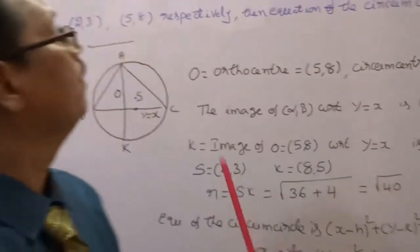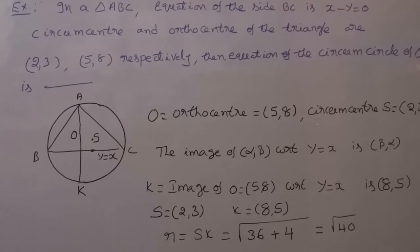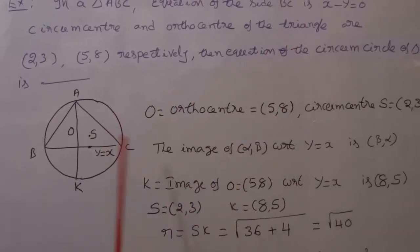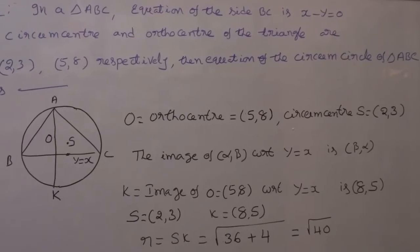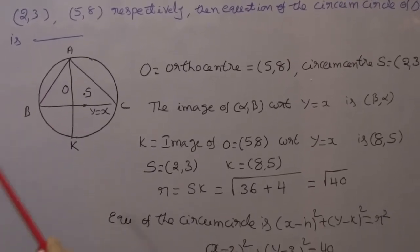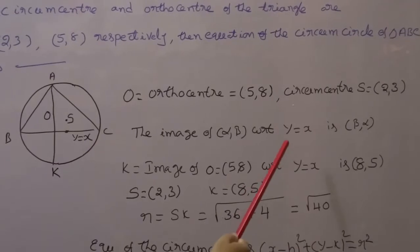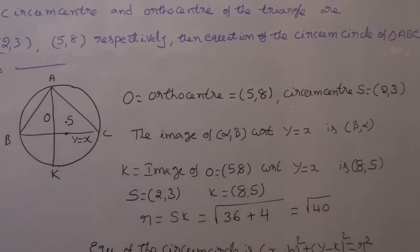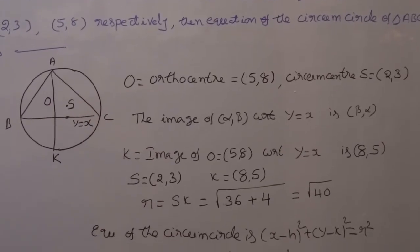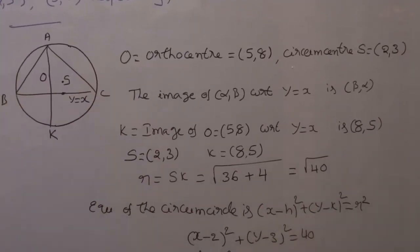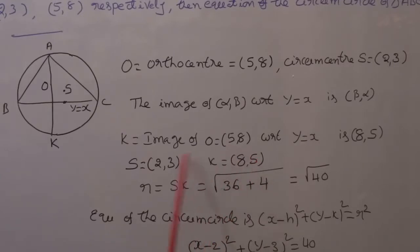Now we see one example. In a triangle ABC, the equation of side BC is y equals x. The circumcenter and orthocenter of the triangle are (2, 3) and (5, 8) respectively. We need to find the equation of the circumcircle of triangle ABC. Given: orthocenter is (5, 8), circumcenter S is (2, 3). The image of (α, β) with respect to y equals x is (β, α), so K, the image of the orthocenter with respect to BC, is (8, 5).